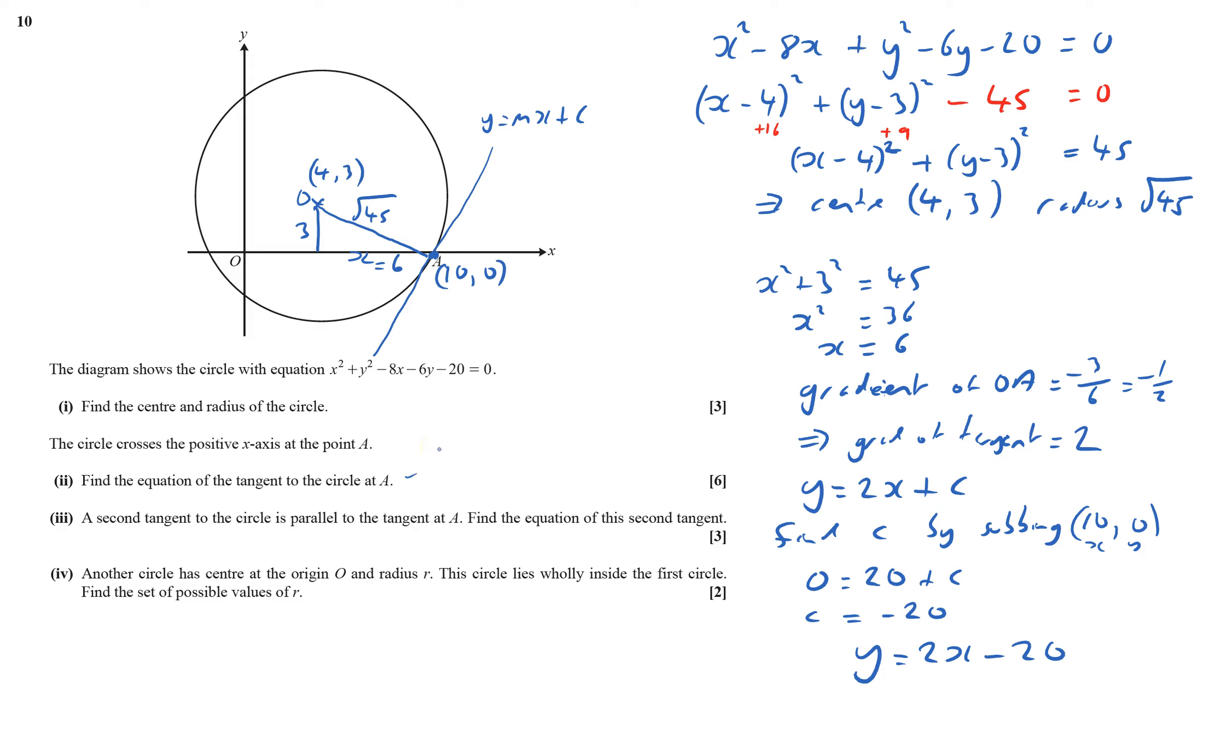A second tangent to the circle is parallel to the tangent at a, so it's parallel to this line. It's going to be the one up here.